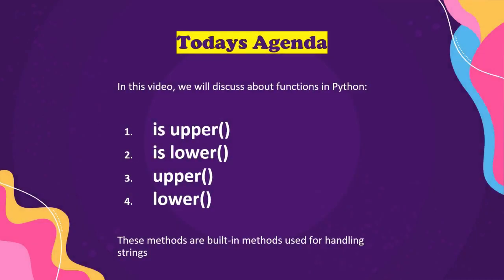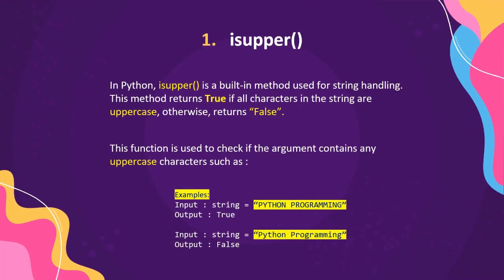In this video we will discuss functions in Python. There are four built-in string methods we will cover: isupper, islower, lower, and upper. These are built-in methods used for string handling, and we will discuss each one in detail.